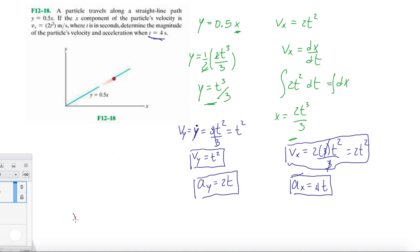We know vx at 4 seconds and vy at 4 seconds. vx at 4 seconds, that is 2t², that'll be 32 meters per second. And then vy at 4 seconds, that is just going to be 16 meters per second. And then ax, it's going to be 16 meters per second squared, and then ay will just be 8 meters per second squared.